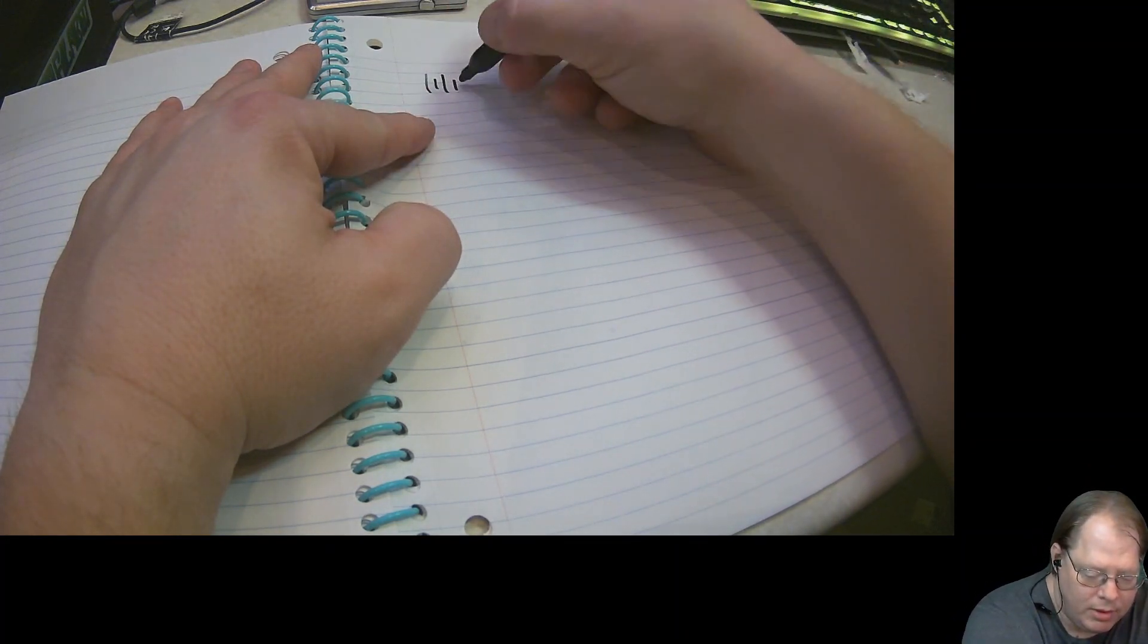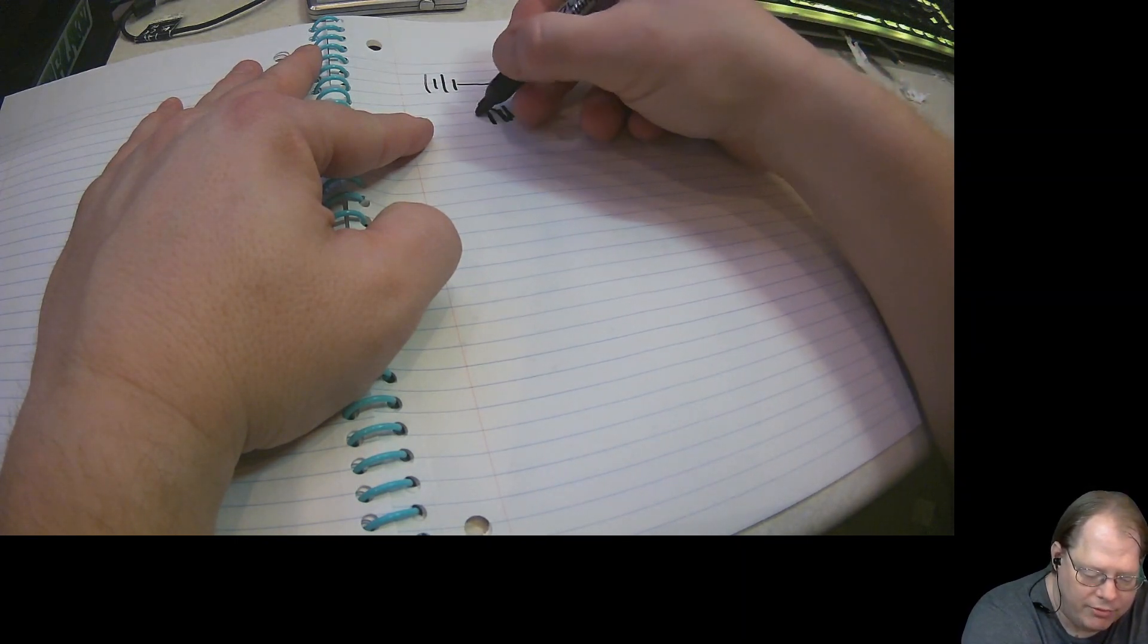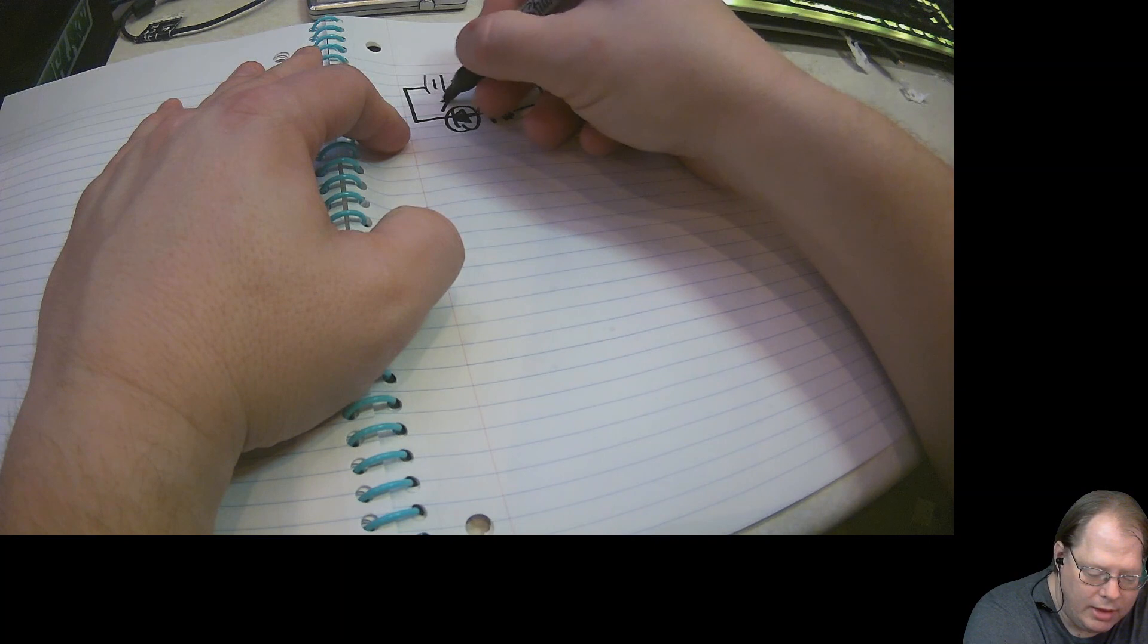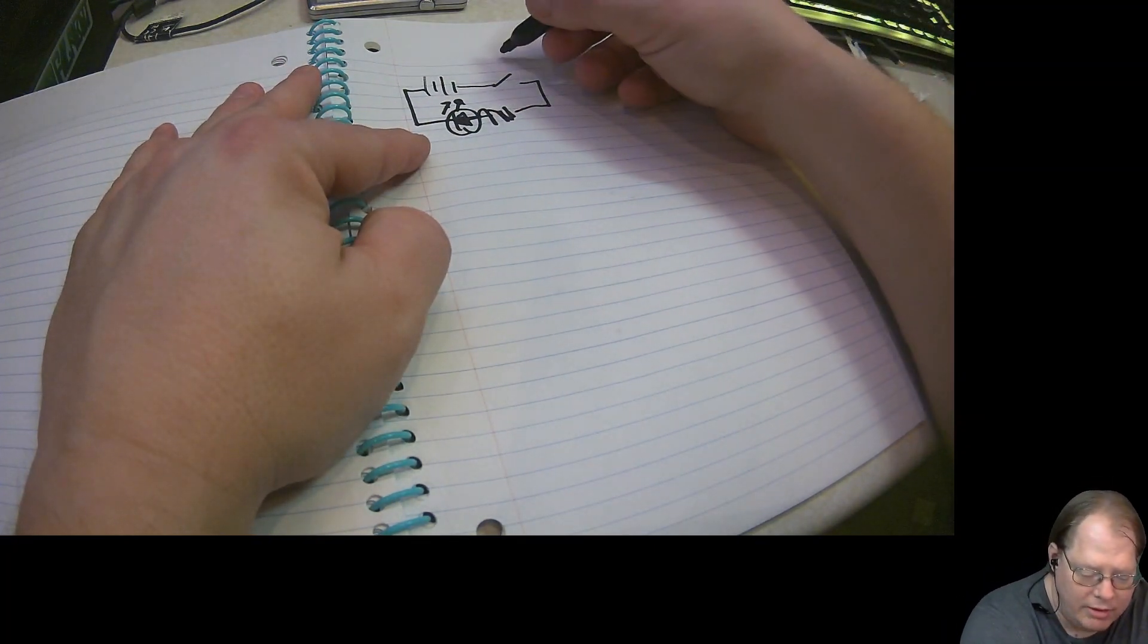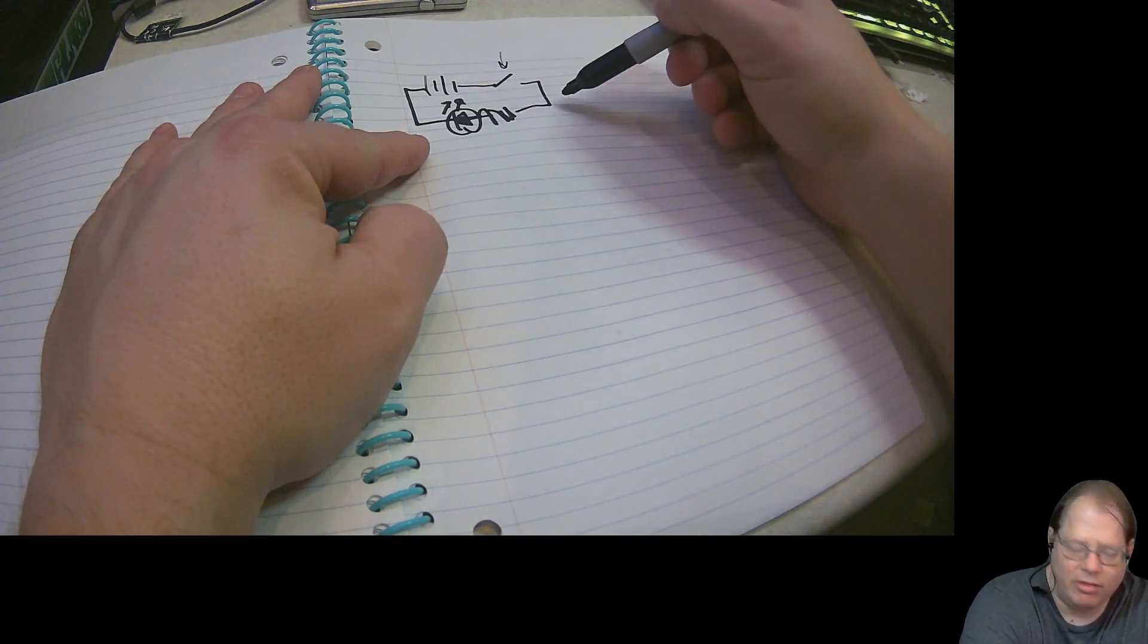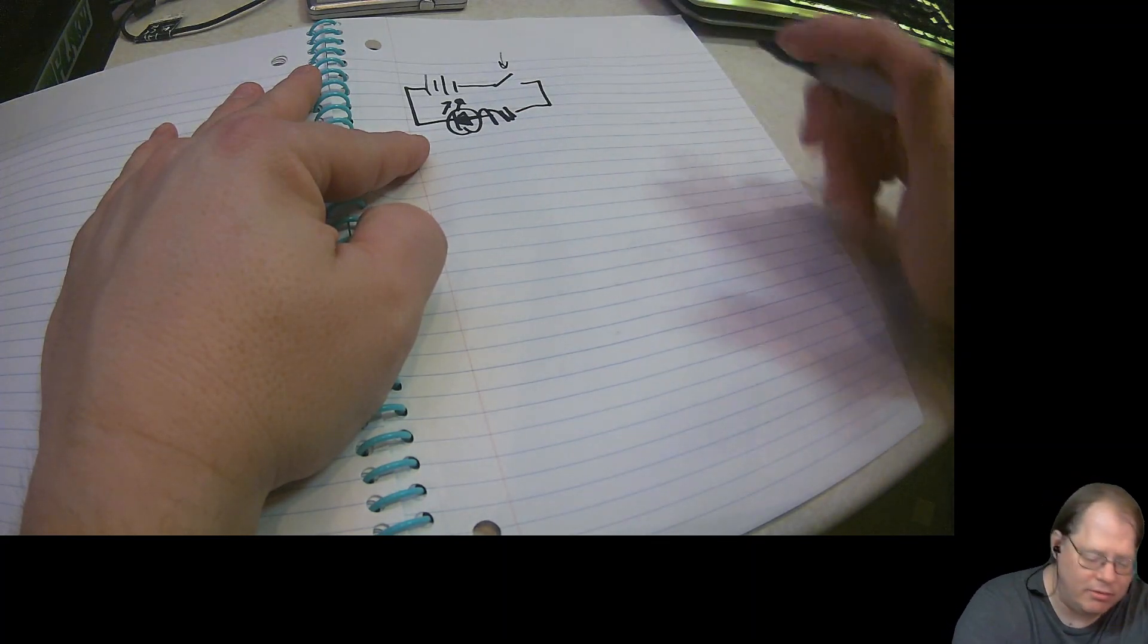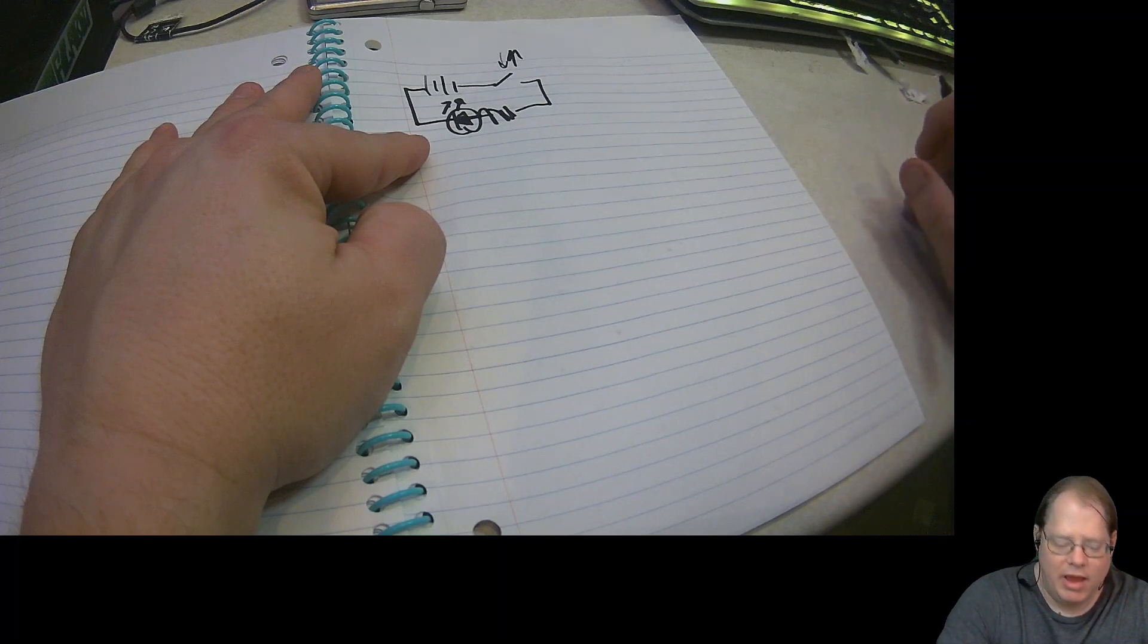So to start off, I'm going to draw a really simple circuit diagram. Simple battery with a push-button switch, the current limiting resistor. Excuse my art skills. They're not very good, but you get the idea. An LED. And so in this simple circuit, when I take my finger and I press down on, let's say it's a momentary tact switch, the light is going to light. It's going to close the circuit, close the loop, and will send power to the LED. The LED will light. When I take my finger off, it opens the circuit and the LED goes off.